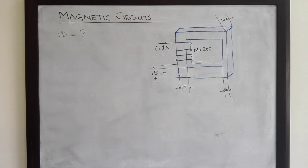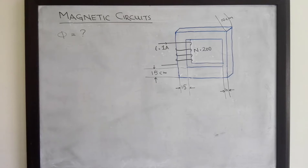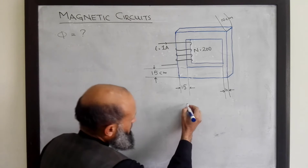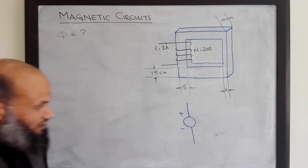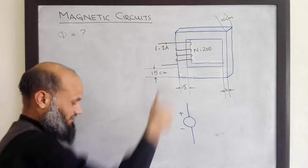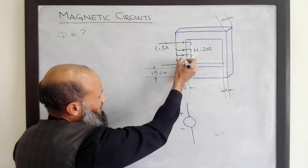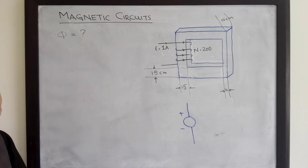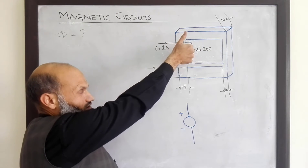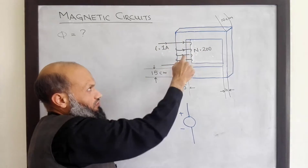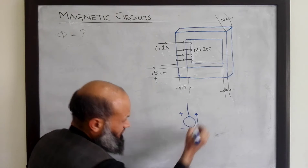We can first draw the equivalent electrical circuit. The source of MMF is represented by a voltage source, and the polarity can be determined by the right-hand rule. Current is flowing in this conductor in this direction, so we grip this core and the fingers curl in the direction of current; the thumb indicates the direction of flux. From this we can determine the polarity of the voltage source, where current leaves from the positive end.